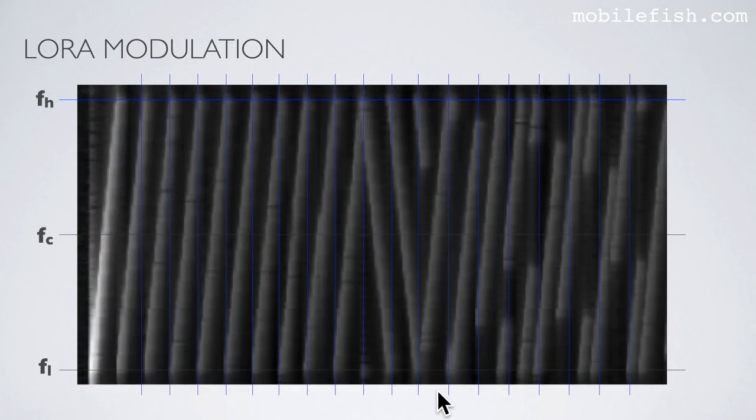Here is an actual LoRa signal and this is the start of the message because it has 10 up chirps followed by 2 down chirps. And here is the encoded message.